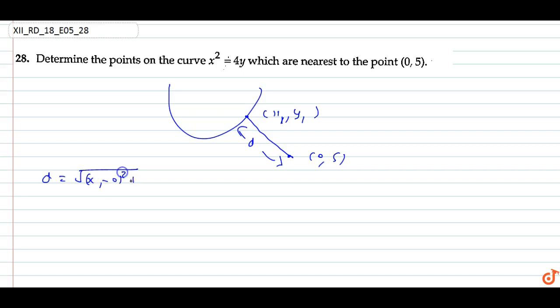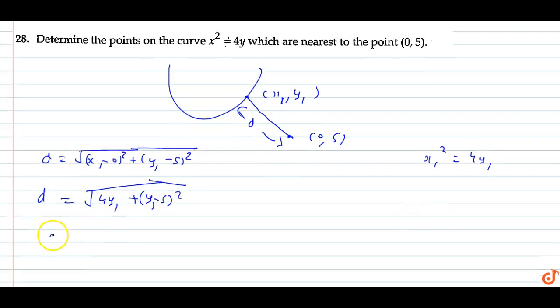What is the distance? d = √[x₁² + (y₁ - 5)²]. Now x₁² = 4y₁, so d = √[4y₁ + (y₁ - 5)²]. Now we have a single variable equation, so we can differentiate with respect to y₁.